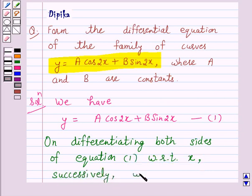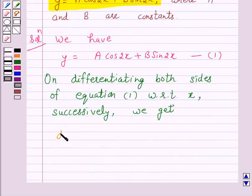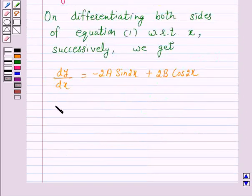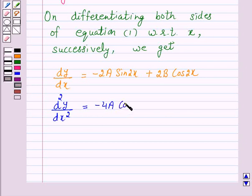We get dy by dx equals minus 2A sin 2x plus 2B cos 2x. And d²y over dx² equals minus 4A cos 2x minus 4B sin 2x.